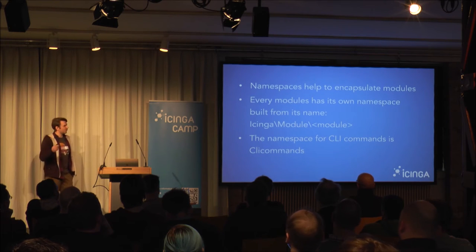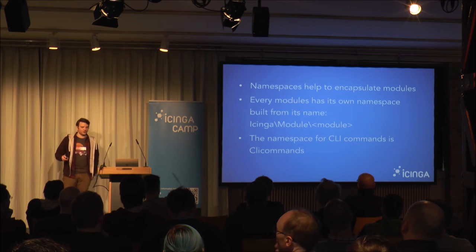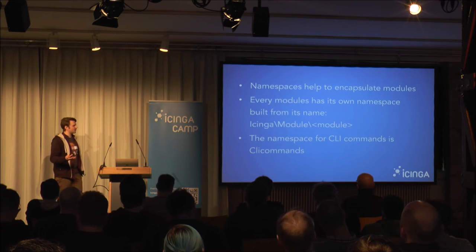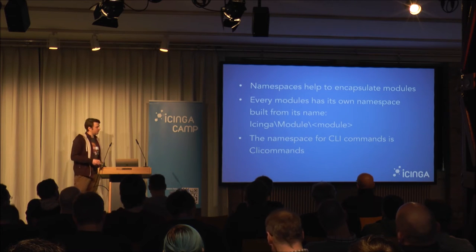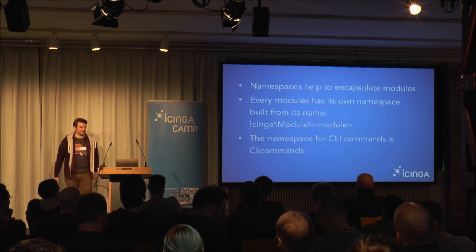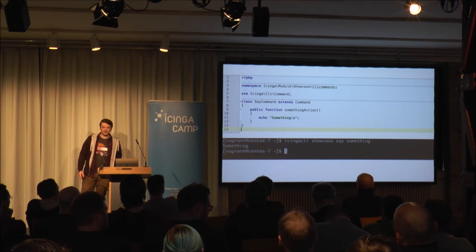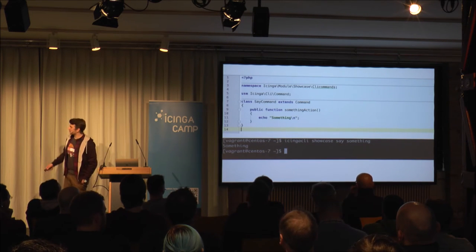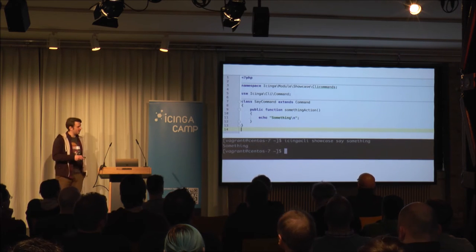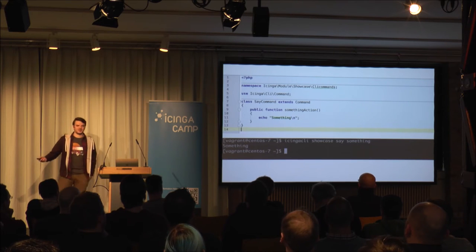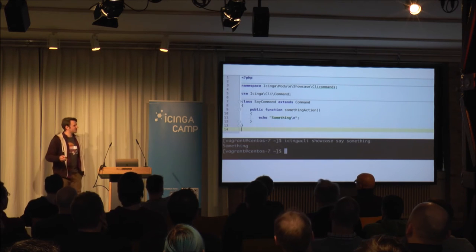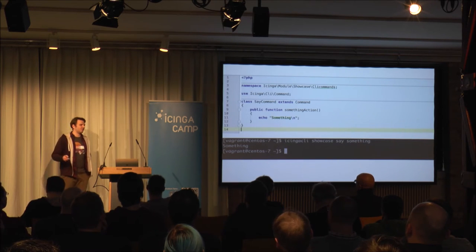Namespaces help us encapsulate our code and also separate modules. Every module is in its own namespace built from its name — that's why we keep names simple. The namespace for CLI commands is 'Icinga\Module\Showcase\Clicommands' — pretty straightforward. This command just echoes something on stdout. If we call 'icinga-cli showcase say something' it says something. In two minutes of work you already have your first CLI command up and running.